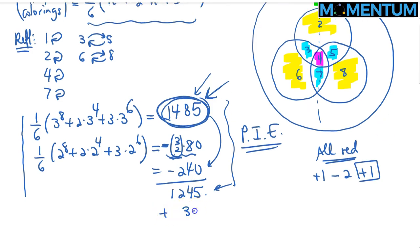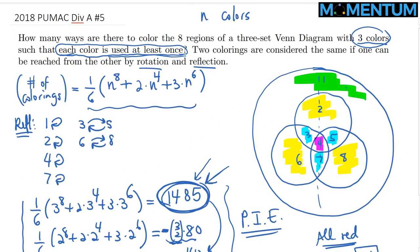So, therefore, I need to add three times one. So, therefore, the final count will be 1248. And that's the final answer to this problem. And we're done.